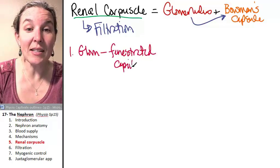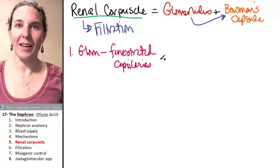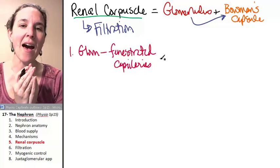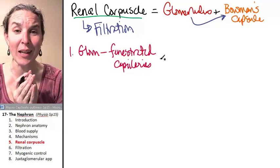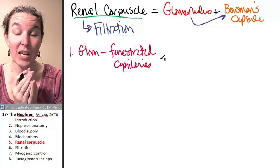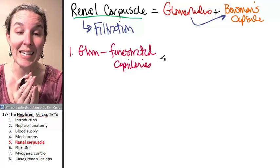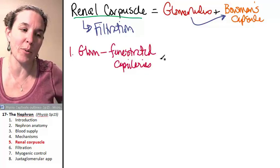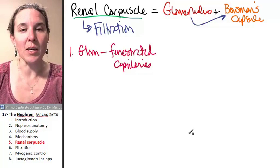Basically, fenestrated just means that they're holey — they're leaky capillaries. They have fenestrations, or slits and holes in them. They're like leaky colanders, which isn't normal. If all of your capillaries were as leaky as the glomerular capillaries, you really would be like a giant blueberry of swollen edema. So thank you for that not being the case.